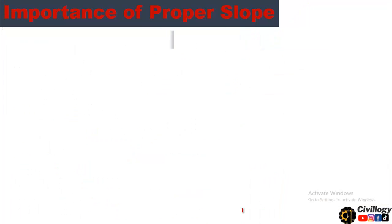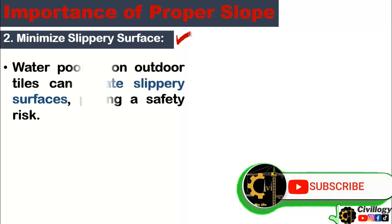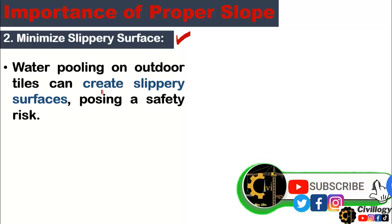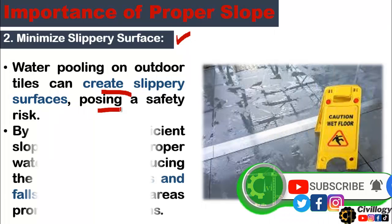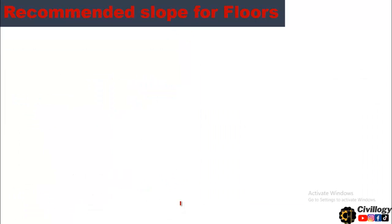The second important point is minimizing slippery surfaces. If water accumulates for a longer period on the surface of the floor, it becomes slippery. Water pooling on outdoor tiles can create slippery surfaces, posing a safety risk. By providing a sufficient slope, you promote proper water drainage, reducing the likelihood of slips and falls, especially in areas prone to wet conditions.